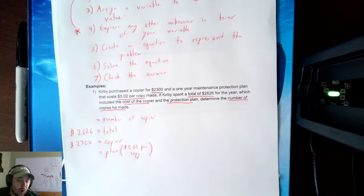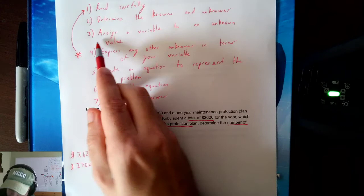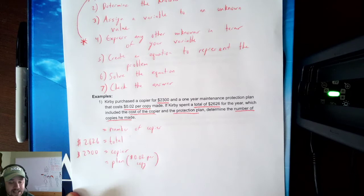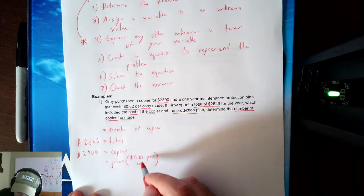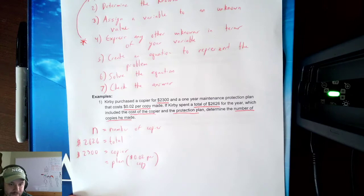Now I need to pick one of these two unknowns to be my variable. If I choose the number of copies — that's step three — then doing step four, I could find the cost of the plan by multiplying. Since I'm looking for the number of copies, I'm going to choose that to be my variable, and I'm going to choose the letter N — a good letter for the word 'number of copies.' You could use X, A, B, C — it doesn't matter.